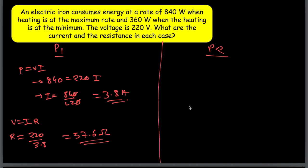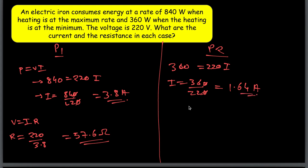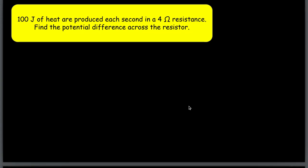For P2 = 360 watts: P = VI → 360 = 220 × I → I = 360/220 ≈ 1.64 amperes. Resistance R = V/I = 220/1.64 ≈ 134.15 ohms. That is your answer for the second case.